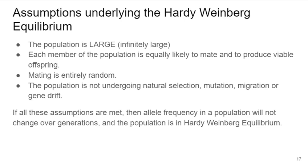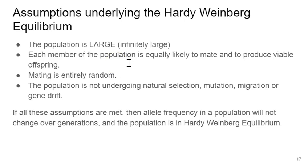You should already be scratching your head, because of course mating is not entirely random — we select our mates very carefully. Populations are not always infinitely large; they can sometimes be small, like an island population. Each member will not be equally likely to mate and produce viable offspring, and mutation happens all the time. But nonetheless, these assumptions collectively give us a way to look at a population as a system and know what we would see if evolution wasn't happening. It's something called a null model.